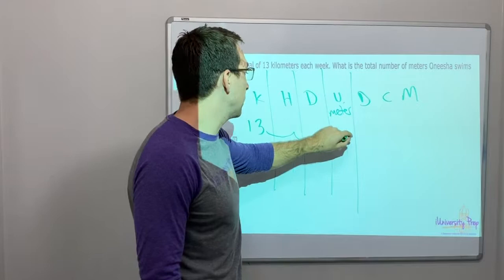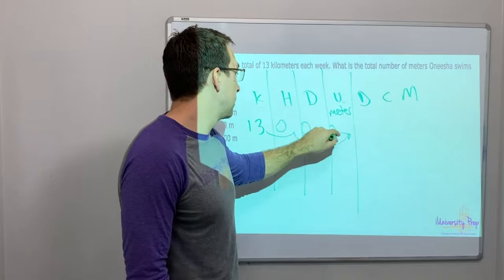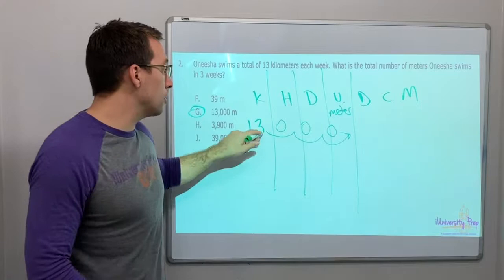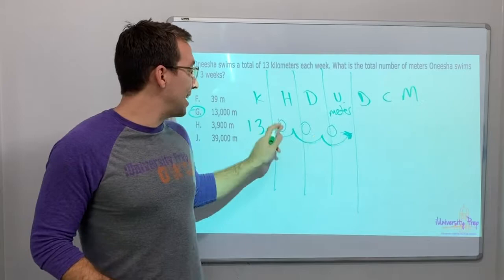So we need to go one, two, three. Okay. So that would be three zeros. One, two, three. 13,000. 13,000 meters. Isn't that cool? If you know King Henry died unexpectedly drinking chocolate milk, all you have to do is draw your arrow. One, two, three, to get to the right column, and you add zeros for each column. It's 13,000 meters.